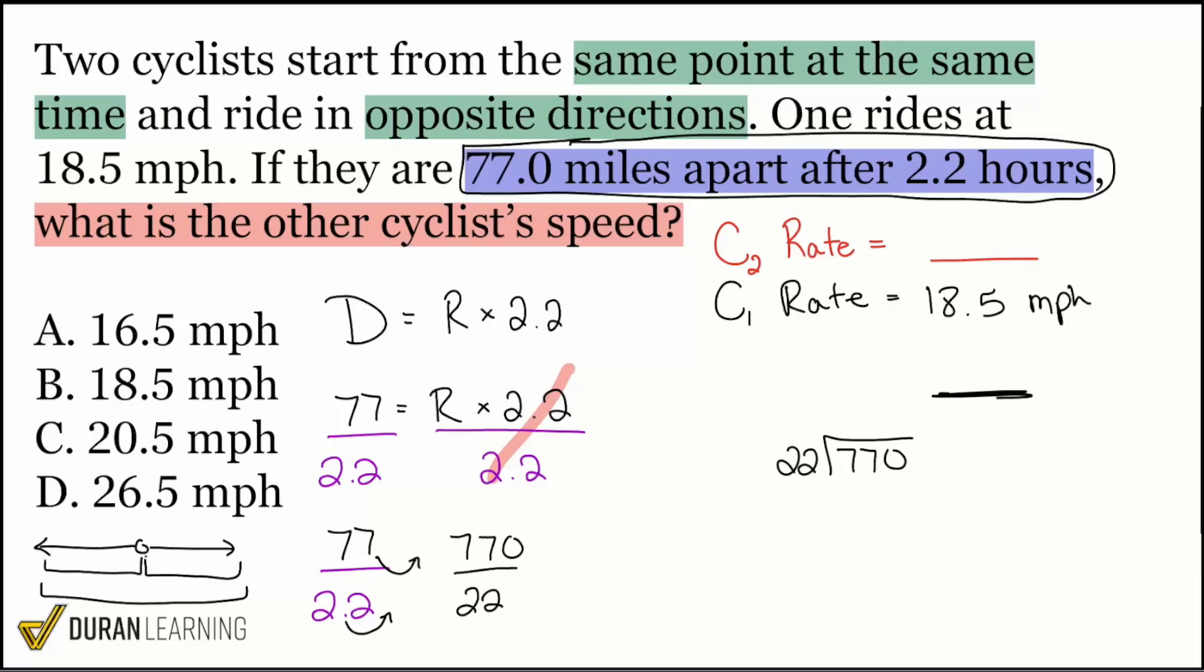I can just do the long division here. 22 going into 770. How many times does 22 go into 77? It's going to go 3 times. 3 times 22 is 66. Subtract them and we get 11. Drop that 0, we have 110. How many times does 22 go into 110? That'll be a clean exact 5 times. 5 times 22 will be 110. Use a calculator to double check that if you need to. So that's a clean division and that's 35.